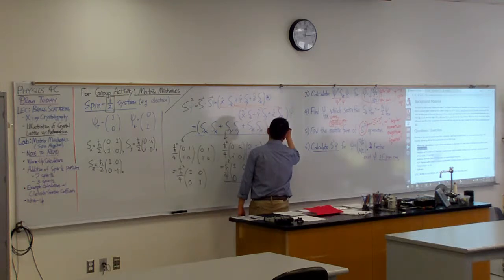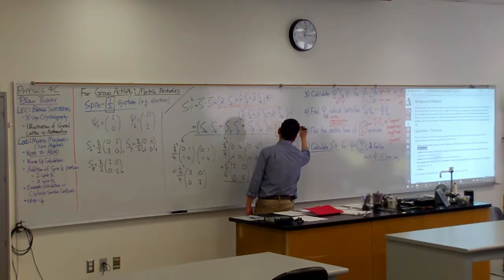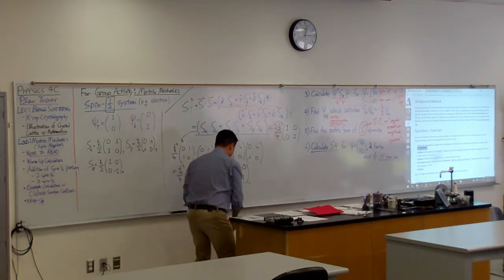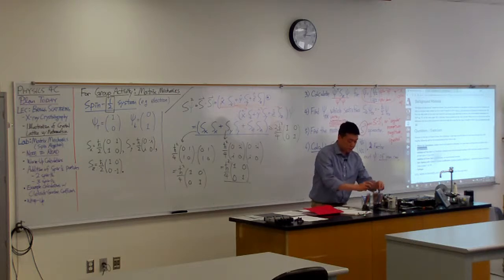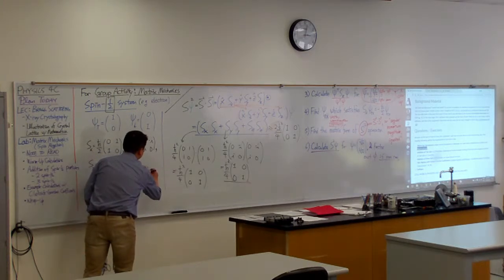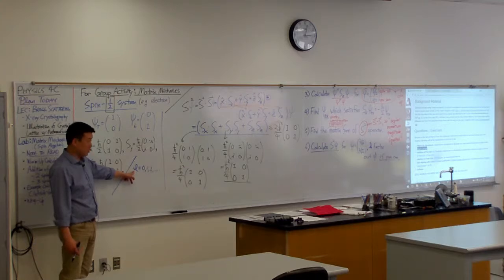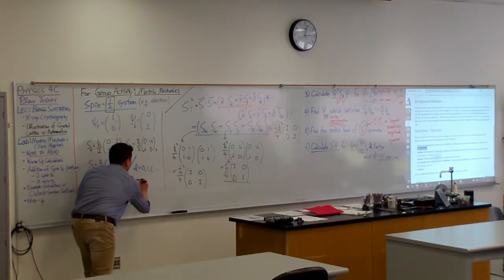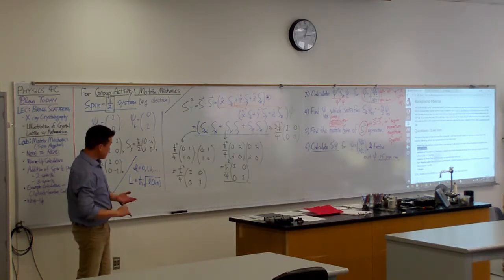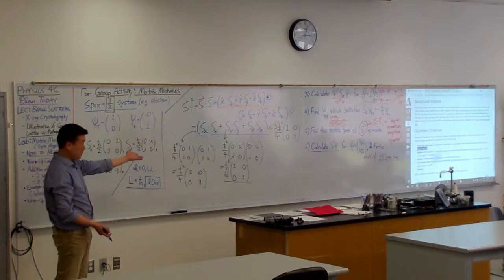So the overall result is equal to 3 h bar squared over 4 times the identity matrix. And this actually agrees with something that you are told on Tuesday. With the quantum numbers on Tuesday, this is what you are told. Remember the L quantum number? L quantum number goes from 0, 1, 2, whatever. And we say this is the angular momentum quantum number. And we say this is related to the magnitude of angular momentum. And that the magnitude of angular momentum is equal to h bar times square root of L times L plus 1.